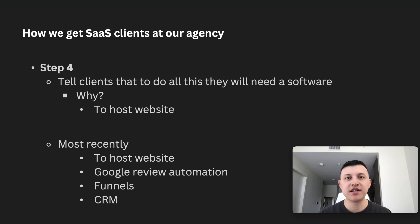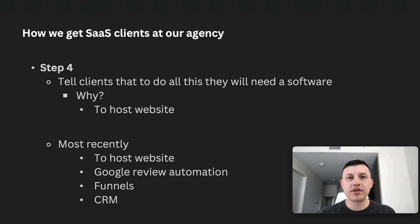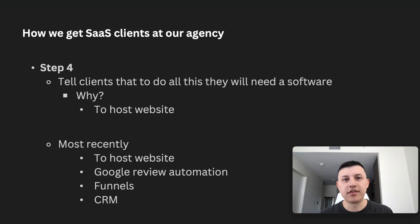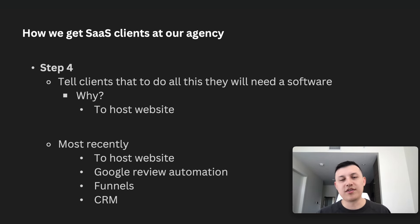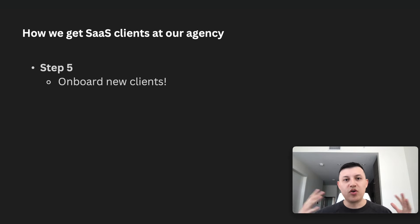During the sales call, once the client is sold on the service and ready to go, we tell them: 'By the way, there's one thing you'll need to sign up for — the software that runs the websites and automations for the Google reviews. It's just one software at a certain amount per month.' At that point the client is already sold, and they already know you need software to run a website — whether it's Squarespace, Wix, or Shopify — so they expect it. In our case, it's our own white-label Go High Level.